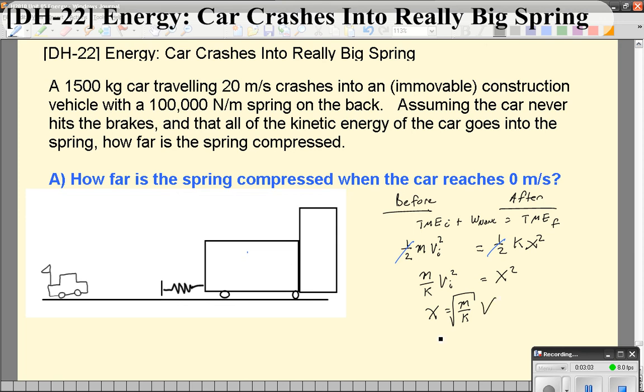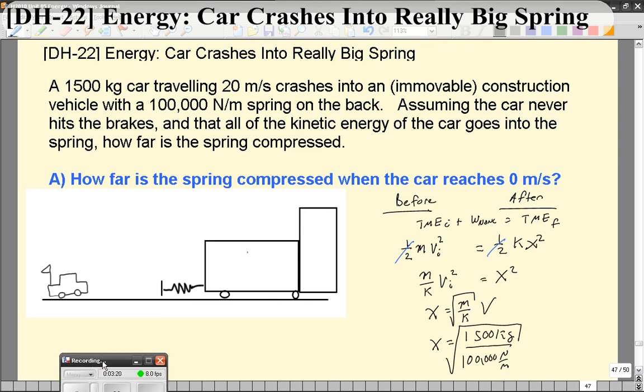So, for this particular problem, when we plug in the numbers, the mass of the car is 1500 kilograms. The ginormous spring constant is 100,000 newtons per meter. And the velocity of the car, initially, is 20 meters per second.